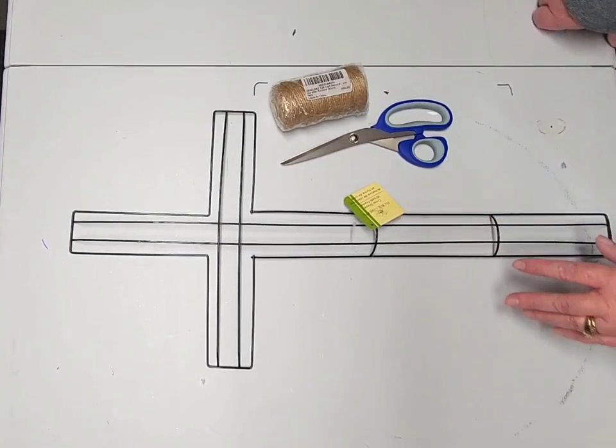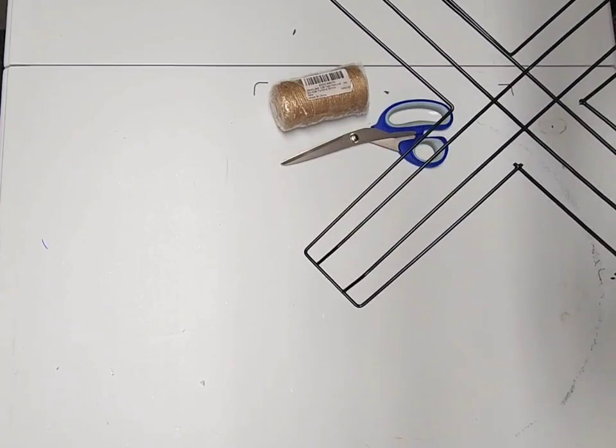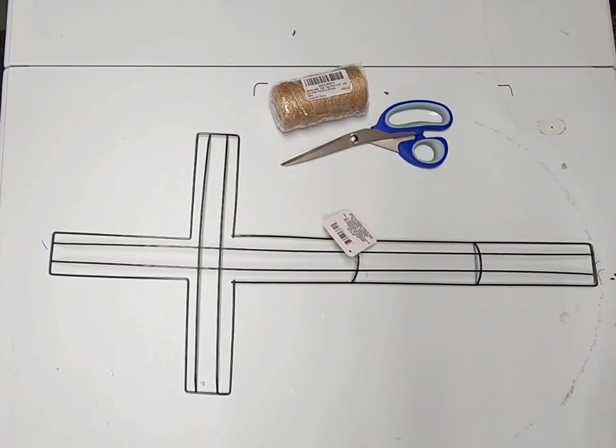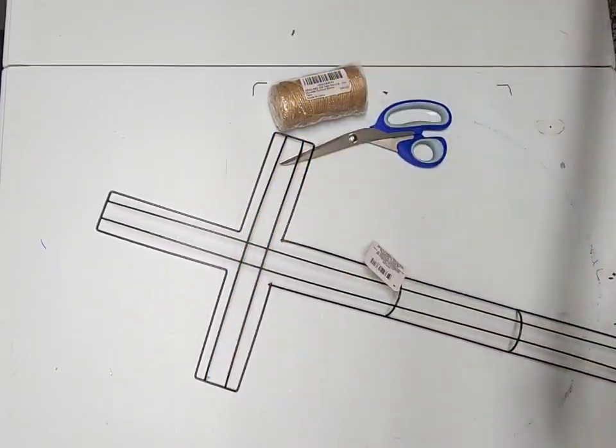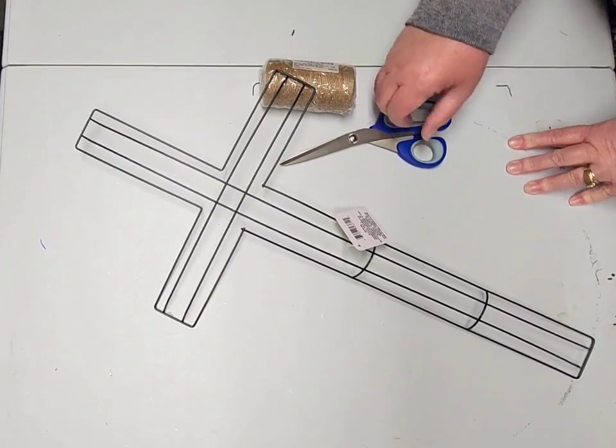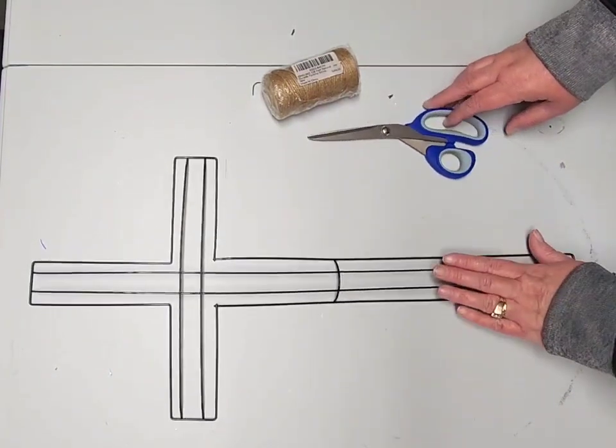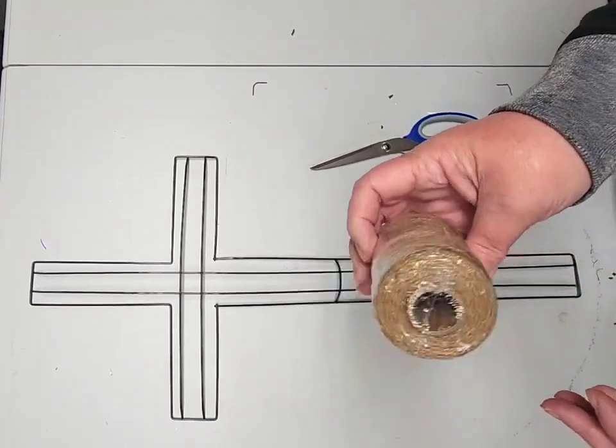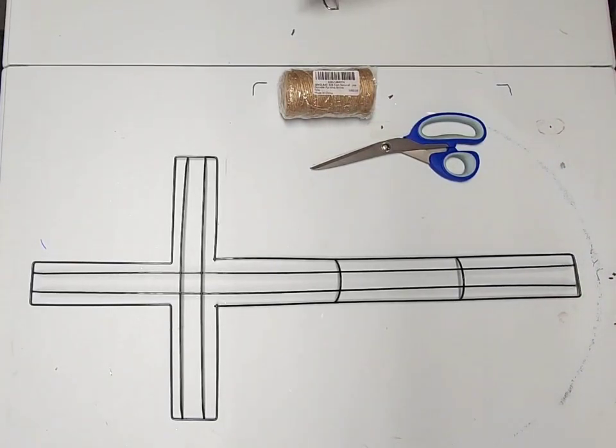All right friends, what you're going to need to start with will be one of the cross shaped wreath frames from the Dollar Tree. These are actually pretty long. That's 24 inches in length and 12 inches in width at its widest point and probably an inch or so tall. I'm going to make a farmhouse cross wreath today. I've got a package of natural twine, my glue gun and a couple of glue sticks handy, and my glue gun is heating up.